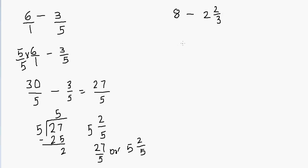So we're going to write 8 minus — and then convert the mixed fraction into a fraction. To do that, we multiply the denominator by the whole number: 3 times 2 gives me 6. Then we add that to the numerator: 6 plus 2 gives me 8. So 8 becomes my numerator, and we never change the denominator, so the denominator remains 3. The mixed fraction 2 and 2 thirds converts to 8 thirds.